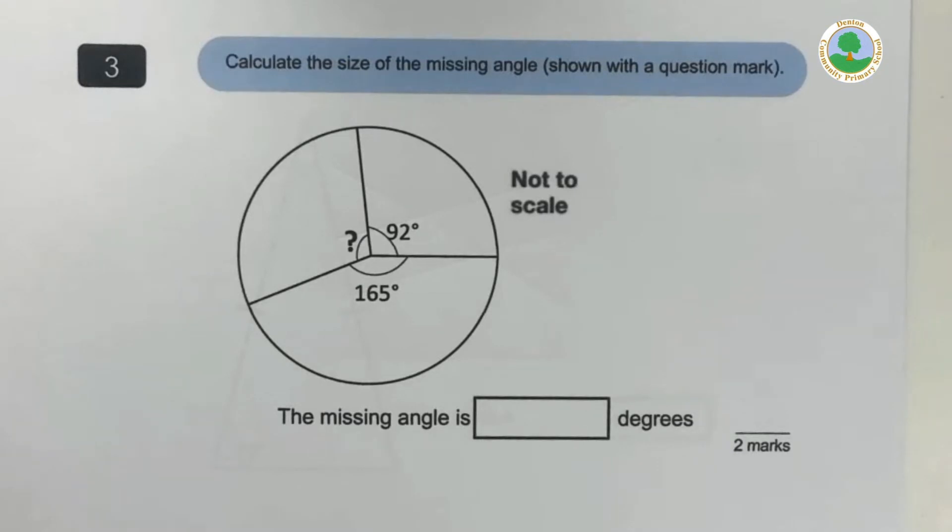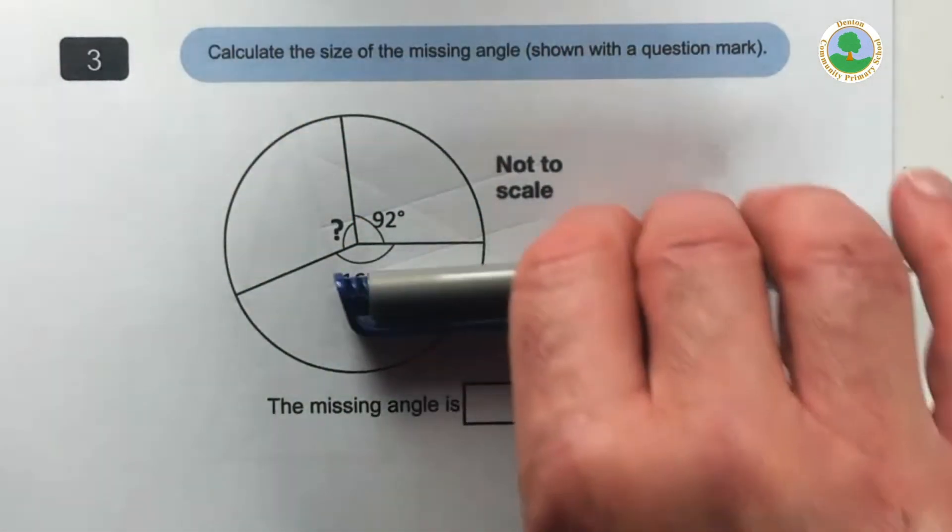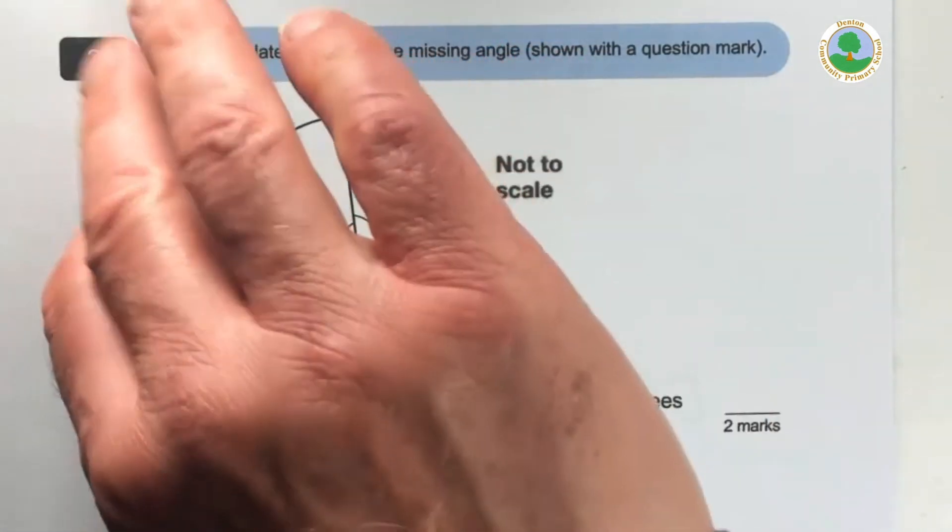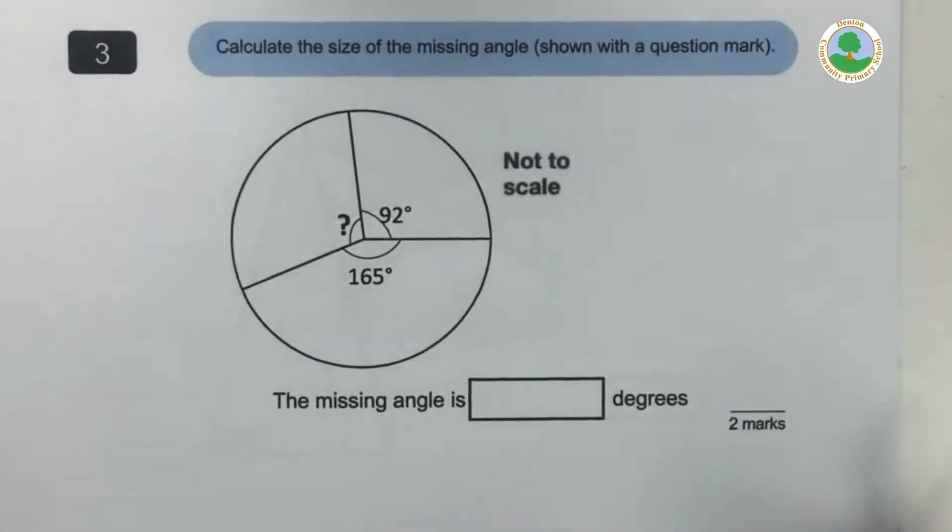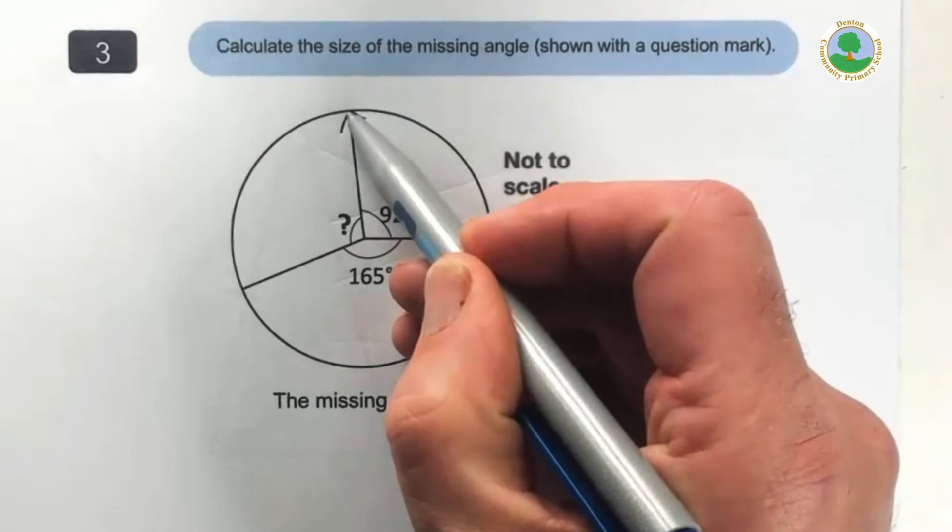Moving on to question three. Calculate the size of the missing angle shown with the question mark. So whenever I've got a circle, I've got 360 degrees. Remember, if I was to turn all the way around and end up where I started, that's 360.